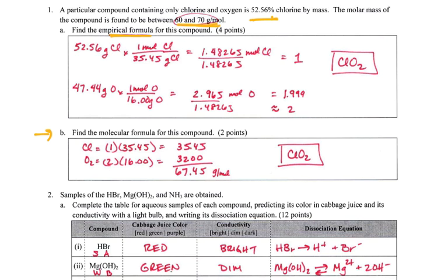The first one says a particular compound containing only chlorine and oxygen is 52.6% chlorine by mass. The molar mass is between 60 and 70, and we don't actually need that piece of information until we get down to part B. We want to find what's the empirical formula of this compound. The biggest problem I've seen when people do this problem is they get a mass ratio, which is not the correct thing to do.